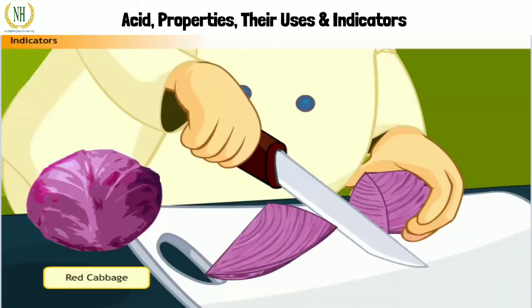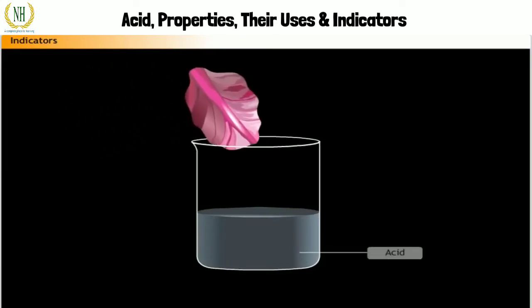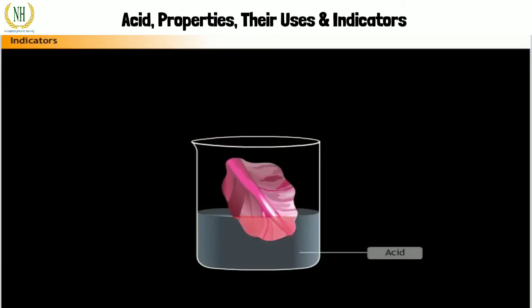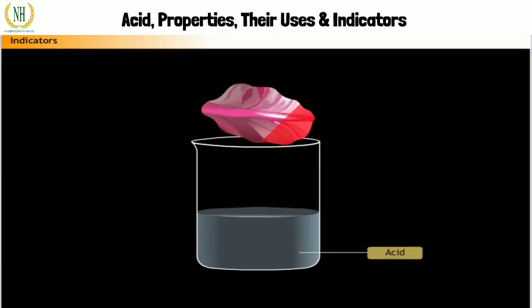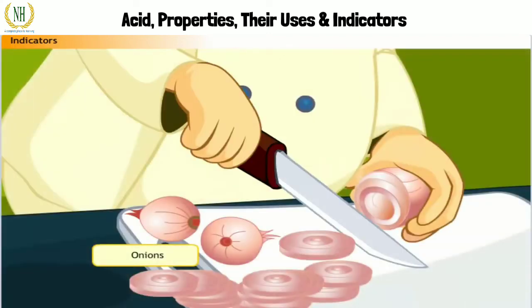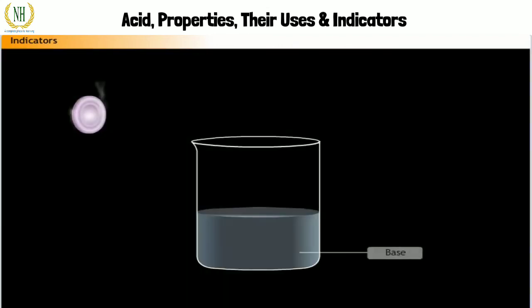An acid-base indicator is the one which exhibits different colors in acids and bases. Red cabbage is a visual indicator used to detect acids. The cabbage leaves are purplish in color but turn red in the presence of an acid. Onions are called olfactory indicators because of their characteristic smell. This smell is destroyed by the action of a base.